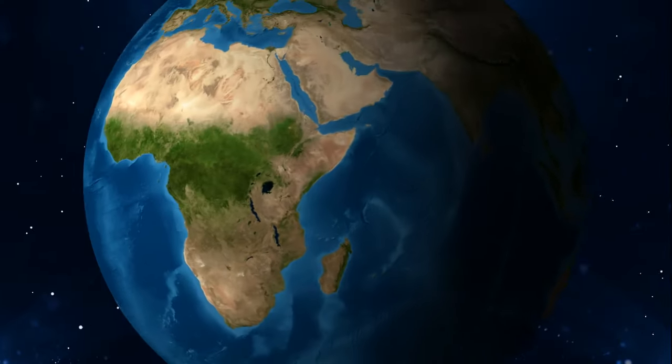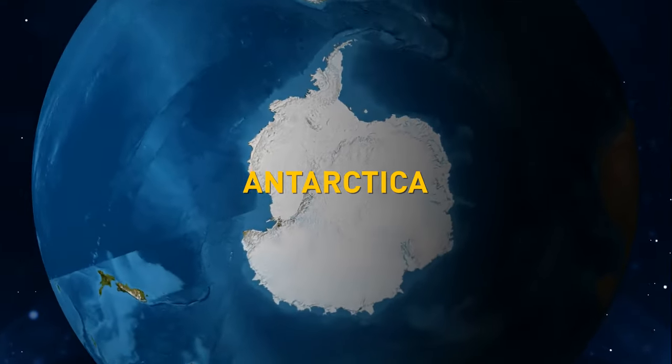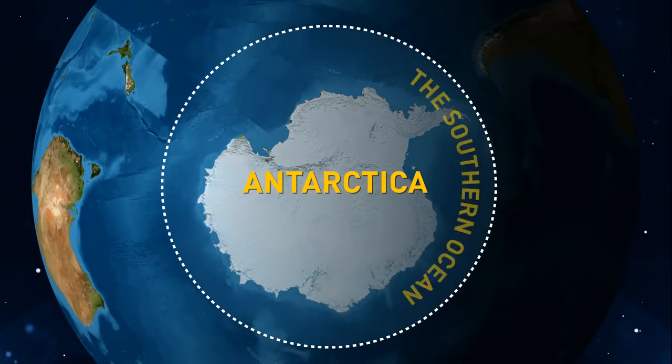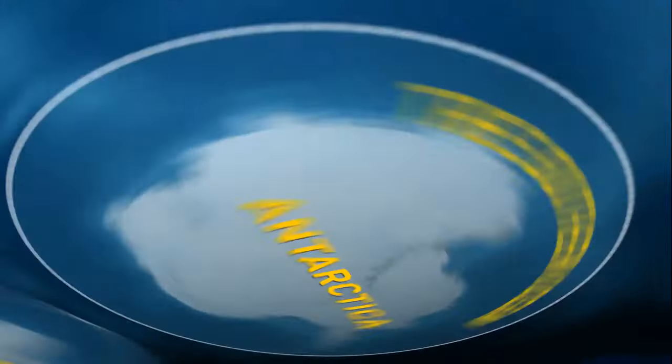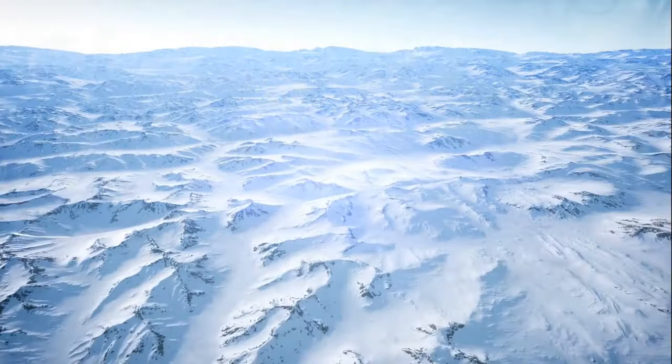First off, where is Antarctica? It's located in the Southern Hemisphere, specifically at the South Pole. The Southern Ocean surrounds it, and most of the continent is covered by ice, making it one of the most remote and frigid places on Earth.